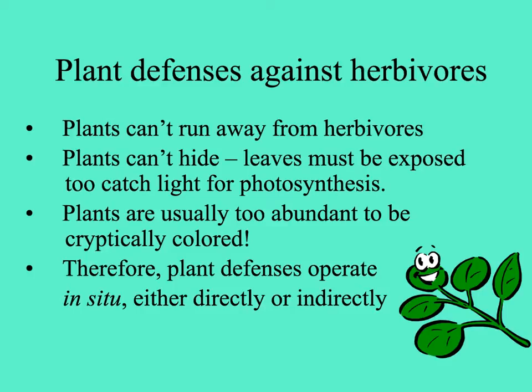So how do plants deal with being eaten? They can't run away. They can't hide because their leaves need to be out and exposed to sunlight to get the energy for photosynthesis. They can't be cryptically colored because they are abundant.